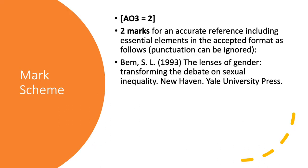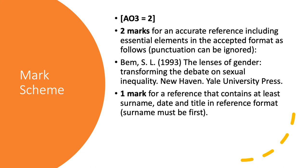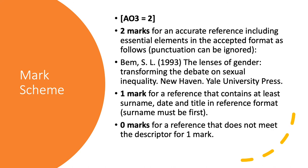So, you should have written Bem, comma, S.L. You need to include the first and the middle initial, if they have one. Then the date, the title of the book, the place of publication, and who published it. You only get one mark for a reference that contains at least a surname, date, and title in reference format. But you need to write this bit word for word if you want the two marks.